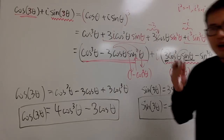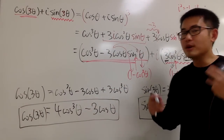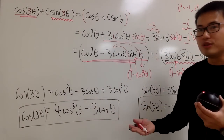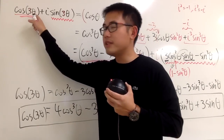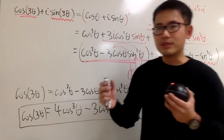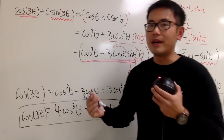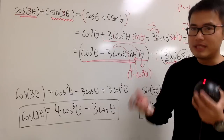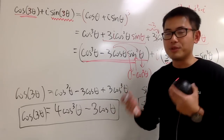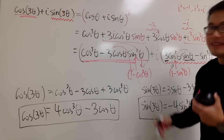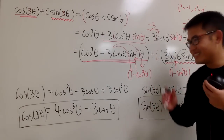Hopefully you like this approach. Of course, there is also a more traditional approach: you can look at cosine of 3 theta as cosine of 2 theta plus theta and break it apart. If you want to see that approach, I'll have links to those videos in the description. Anyway, hopefully you guys like this video.